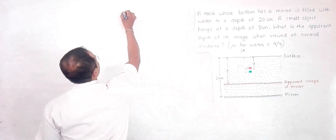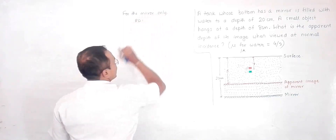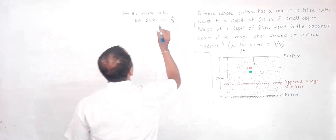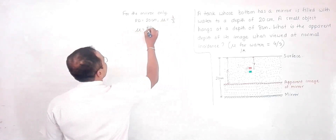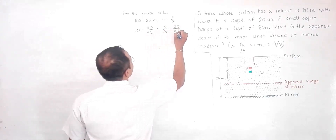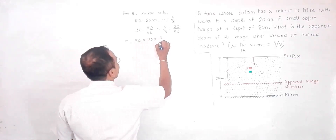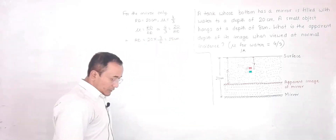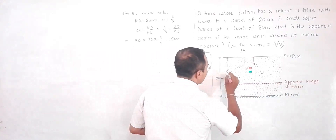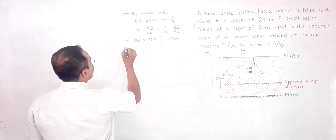For the mirror only: the real depth is 20 centimeters and mu of water is 4/3. Using mu = real depth / apparent depth, we get 4/3 = 20 / apparent depth, which gives apparent depth = 20 × 3/4 = 15 centimeters. So the mirror will now appear to be at a depth of 15 centimeters — this distance D equals 15 centimeters.